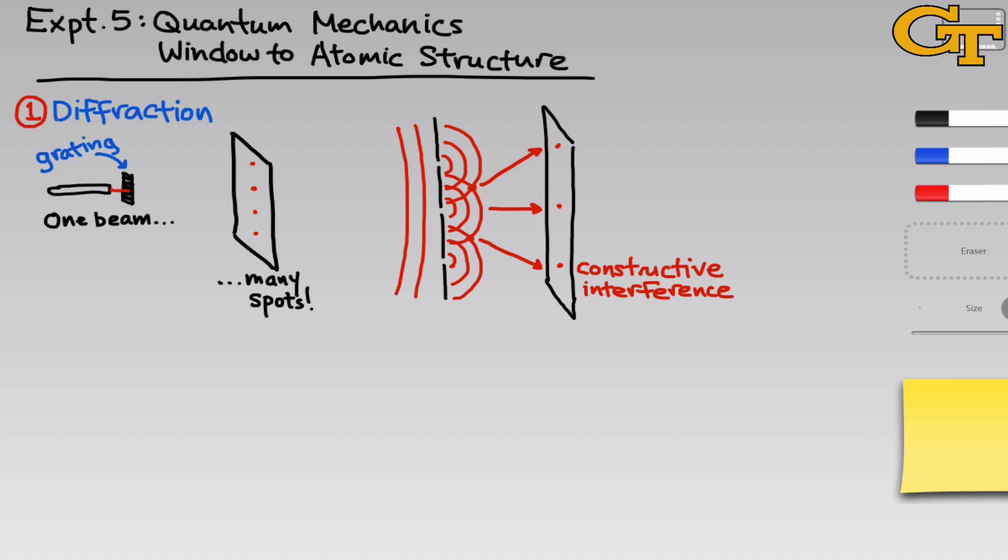Where the waves reinforce one another, where a peak meets a peak of the wave, we have constructive interference, and there we see a spot since the waves are reinforcing one another, and where the waves cancel, we don't see anything, and we call this destructive interference because the negative part of one wave is overlapping with the positive part of another wave so that the net sum is zero and we don't see any light at all.